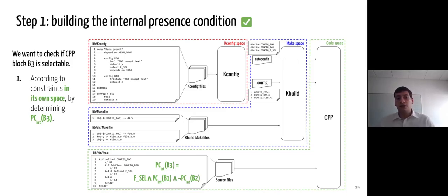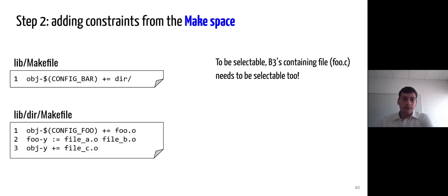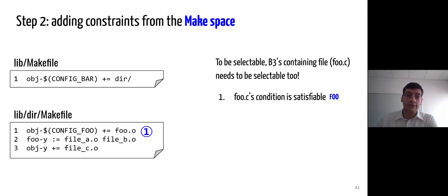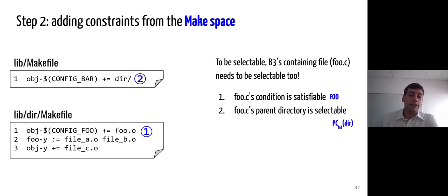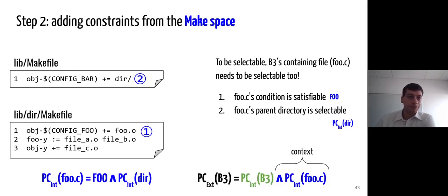We will now add to this expression the constraints from the make space. The selectability of B3 relies on the selectability of its containing file, foo.c. And foo.c is selectable if its selection condition is satisfiable — that is, if the foo feature is selected and its parent directory is selectable, checked by obtaining the presence condition of the dear directory. By doing this, we obtain the internal presence condition of foo.c, which, conjoined to the internal presence condition of B3, gives us the external presence condition of B3 using the make space as context.